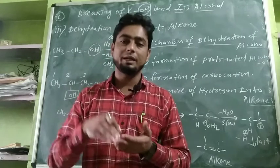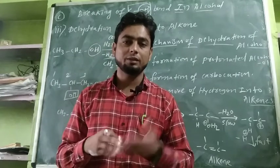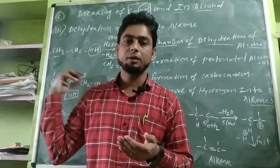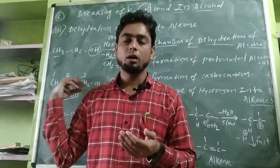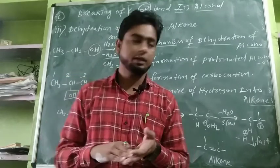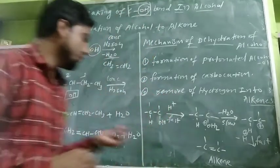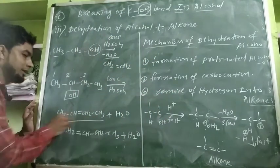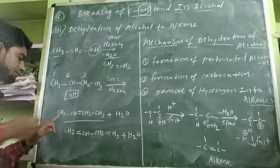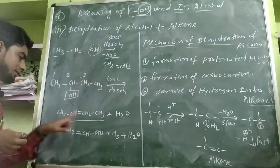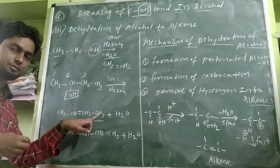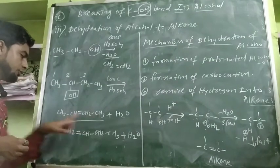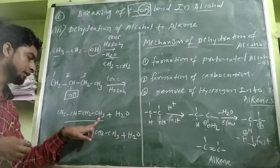Using Zaitsev's rule, we identify whether a given product from alcohol dehydration is major or minor. We number the carbons: first, second, third, fourth. A four-carbon compound is called butene. The IUPAC name of this compound with a double bond at position two is called but-2-ene.